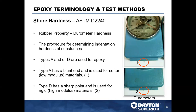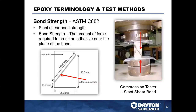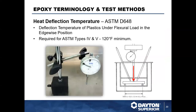Shore hardness measures the durometer hardness of the finished product. Type A has a blunt end and is used for softer, low-modulus material; Type D has a sharper point and is used for more rigid, harder, denser material. Bond strength is assessed using ASTM C882 slant shear bond strength — two component pieces are compressed until they slide apart, and the pressure required to debond the material is recorded.